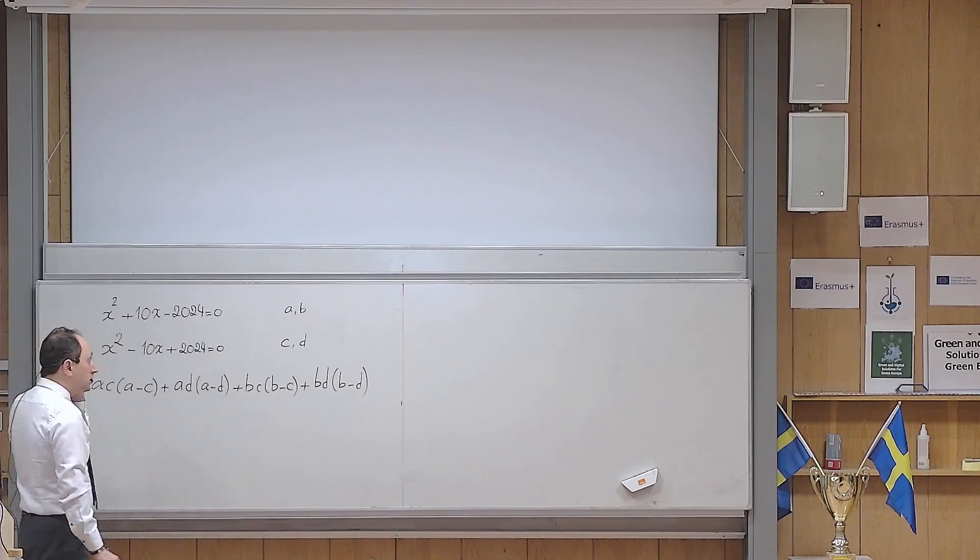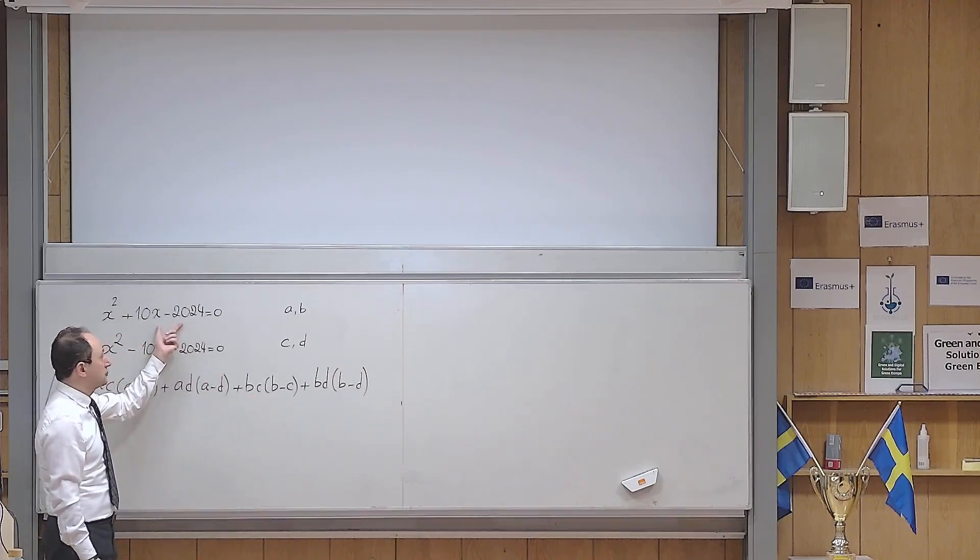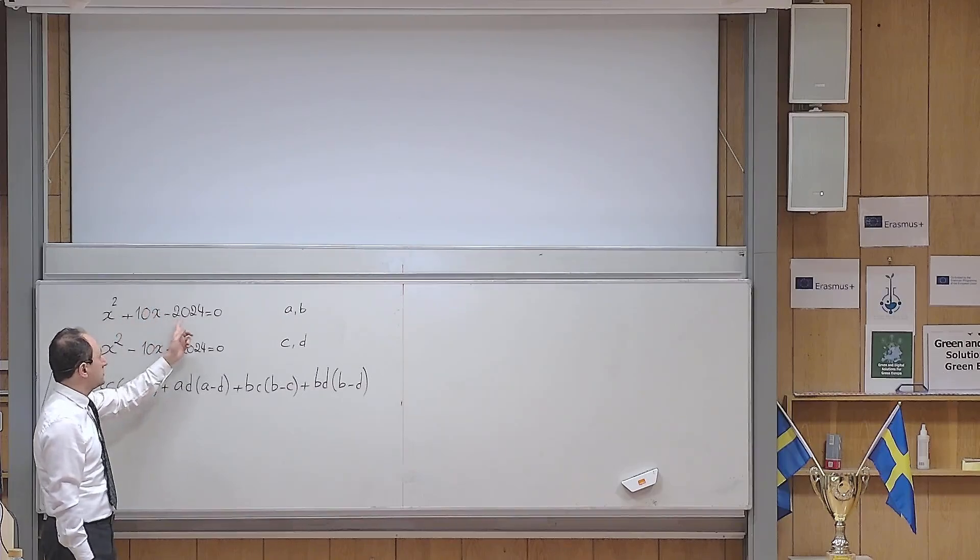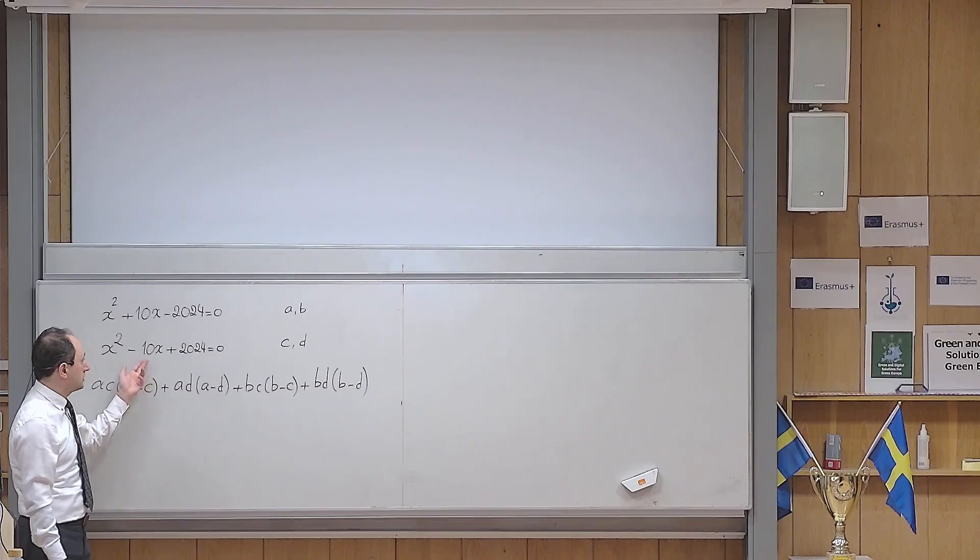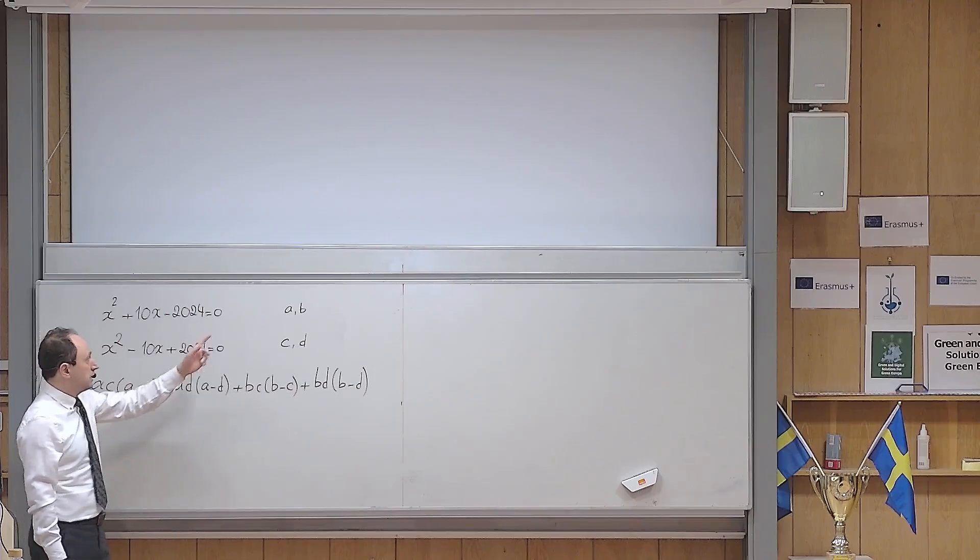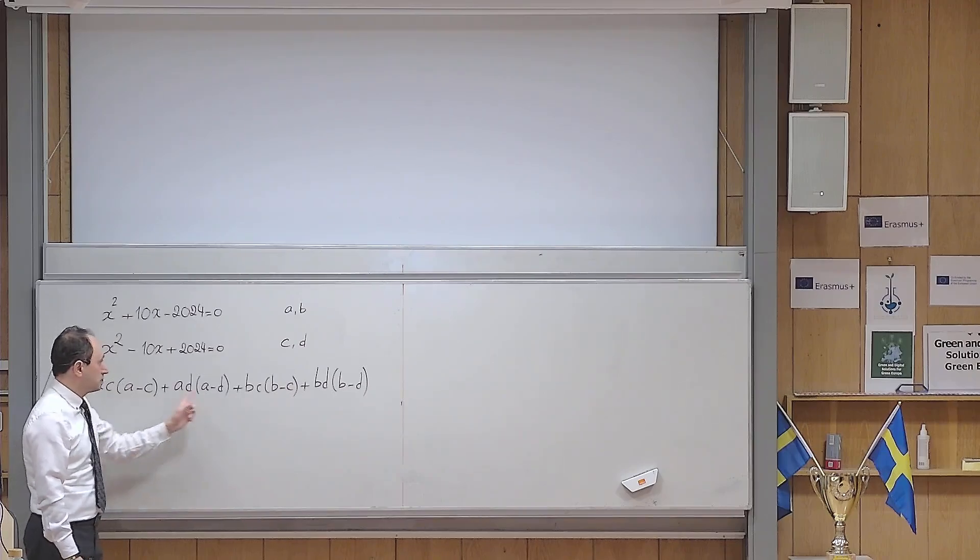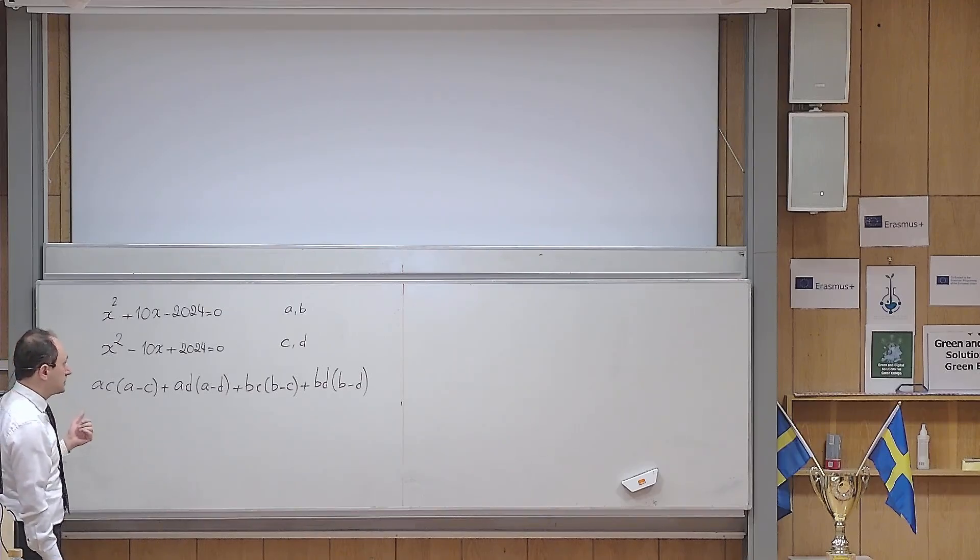So we know that a and b are distinct real roots for this. Why real roots? Because the discriminant of this function is positive. b squared minus 4 times this times that definitely becomes a positive number. And c and d are complex roots of this equation. They are complex because the discriminant of this function is negative. I want to use the properties of the roots of the quadratic equation.